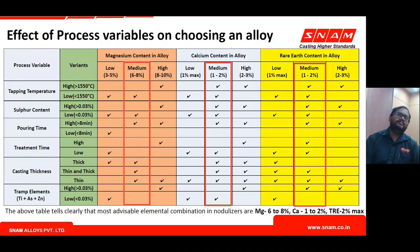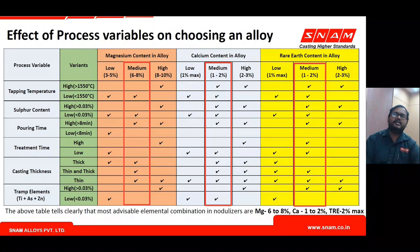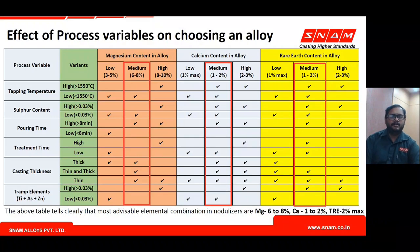This chart is a general guideline for selecting magnesium alloys. Different types are available — low, medium, and high magnesium — with supplementary elements like calcium and rare earth content selected based on foundry process parameters. The table shows that the most ticks go to alloys with medium magnesium content (6–8%), medium calcium (1–2%), and medium rare earth content (1–2%), which suits the maximum recovery conditions for most foundries.